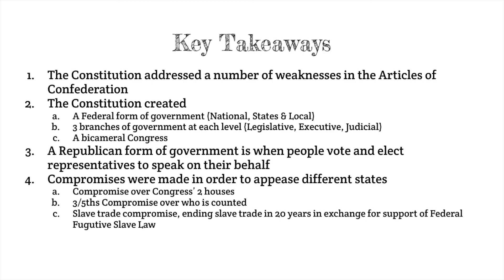There was a compromise over the two houses of Congress versus the single unicameral house under the Articles. We have the three-fifths compromise, which was a compromise over who would be counted in a state's population, and the slave trade compromise, ending the slave trade 20 years down the road in exchange for support of a fugitive slave law. That's a look at our transition from the Articles of Confederation to the Constitution, the significant differences between them, and how the new Constitution laid the foundations for a new government in our country.